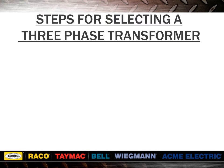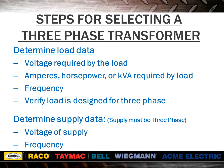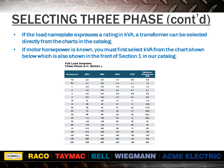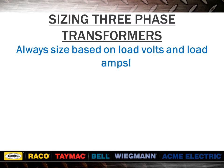Next, we'll review the steps for selecting a three-phase transformer. Again, determine the load data: voltage required by the load, amps, horsepower, or kVA required, the frequency, and verify the load is designed for three-phase. Then determine the supply data — the supply must be three-phase. You need to know the supply voltage and frequency. Supply and load voltage is used to choose the correct voltage group from selection charts. The same notes about motors discussed with single-phase transformers apply to three-phase transformers. If the load nameplate expresses a rating in kVA, select directly from the catalog charts. Remember to always size based on load volts and load amps.